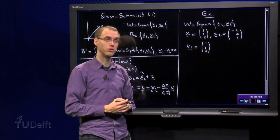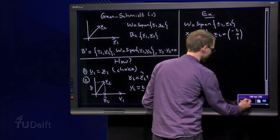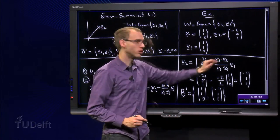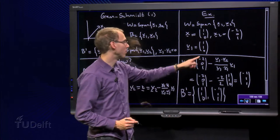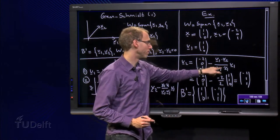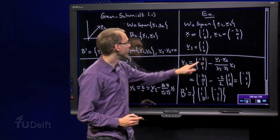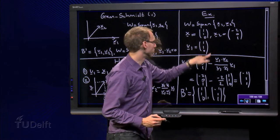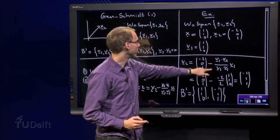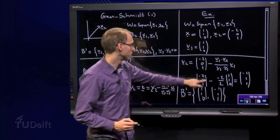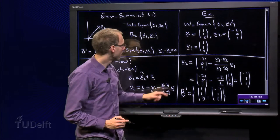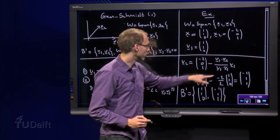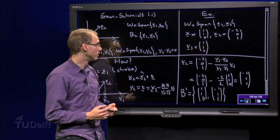Then we have to compute the v2, v2 equals x2 minus the projection of x2 on v1, so v1 inner product x2 over v1 inner product v1 times v1. v1 inner product x2, let's see, minus 2 plus 0 plus 0 equals minus 2. v1 inner product v1, 1 plus 1 equals 2, and 2 over here.